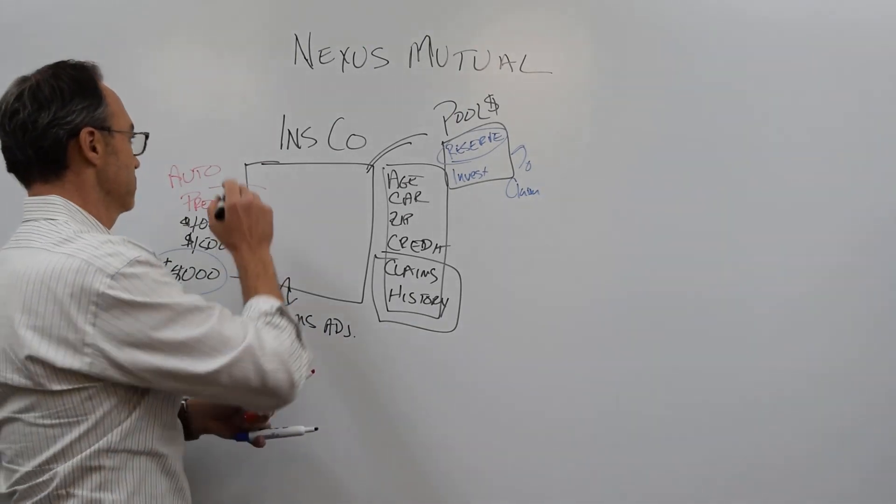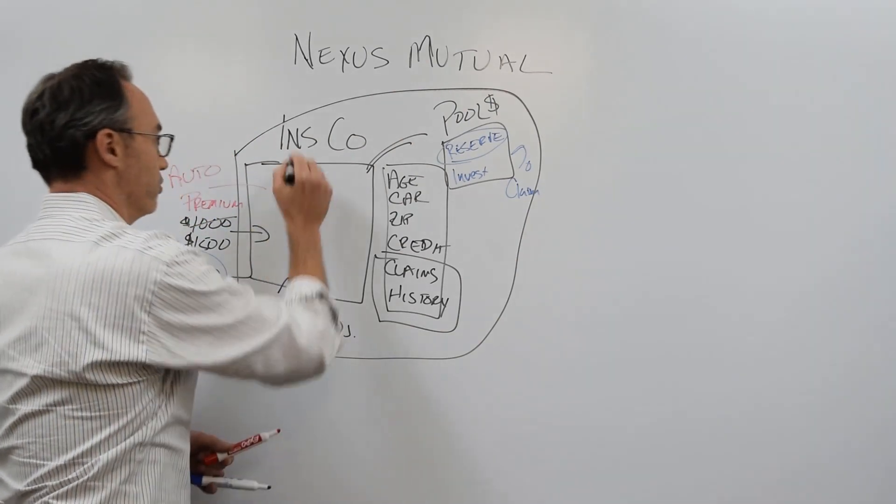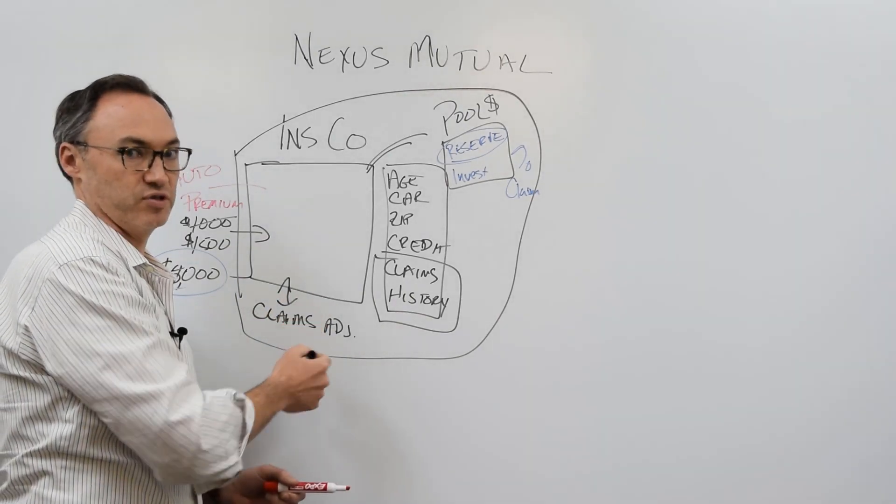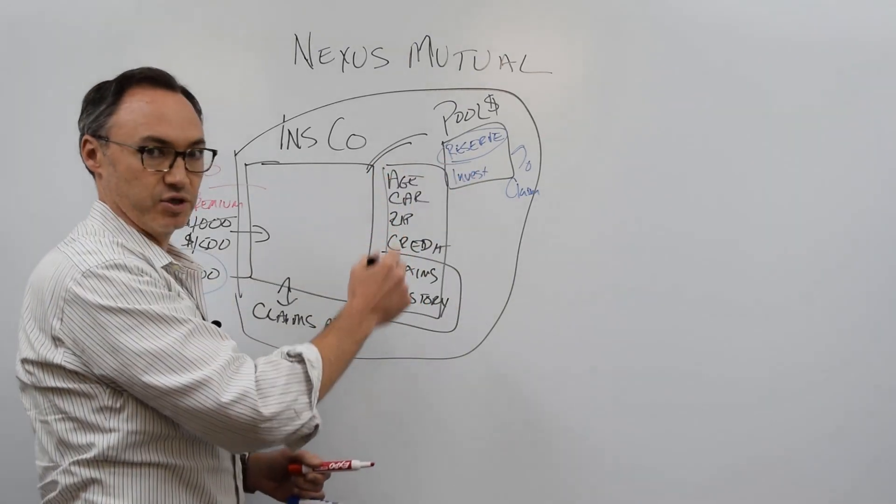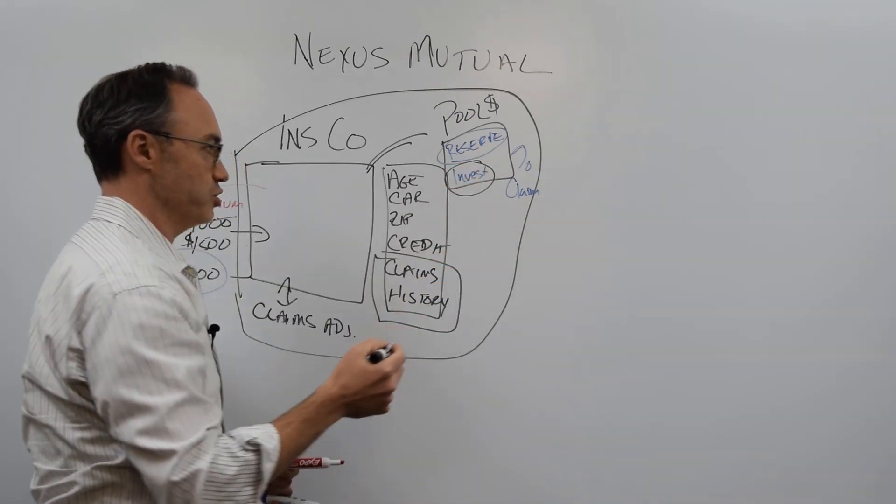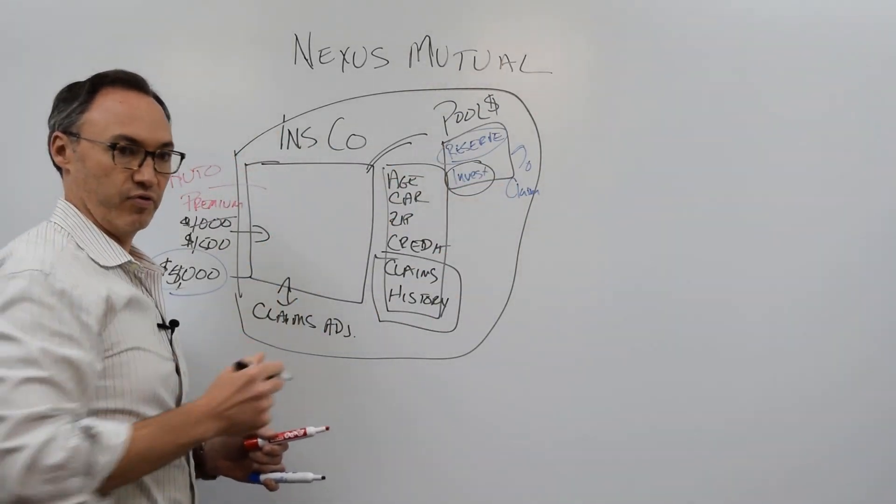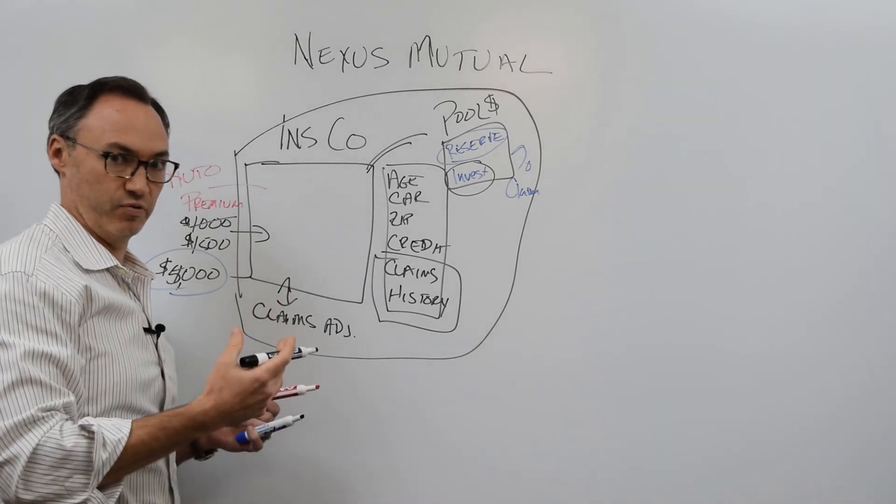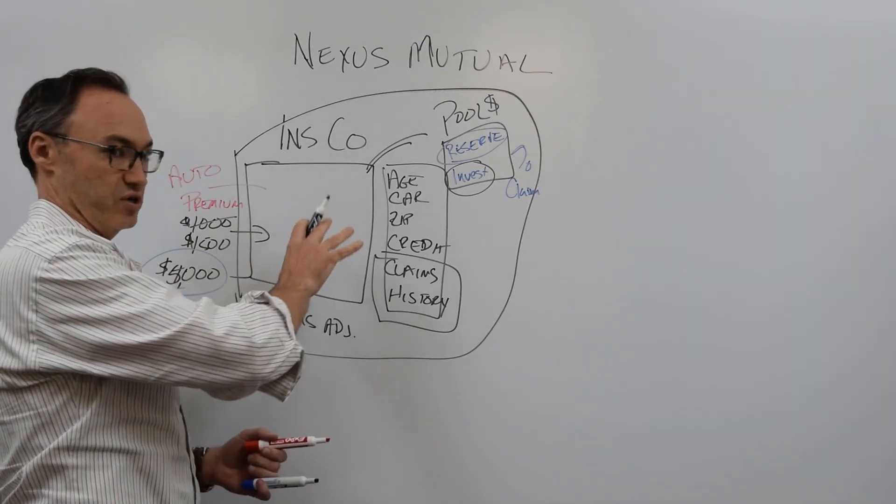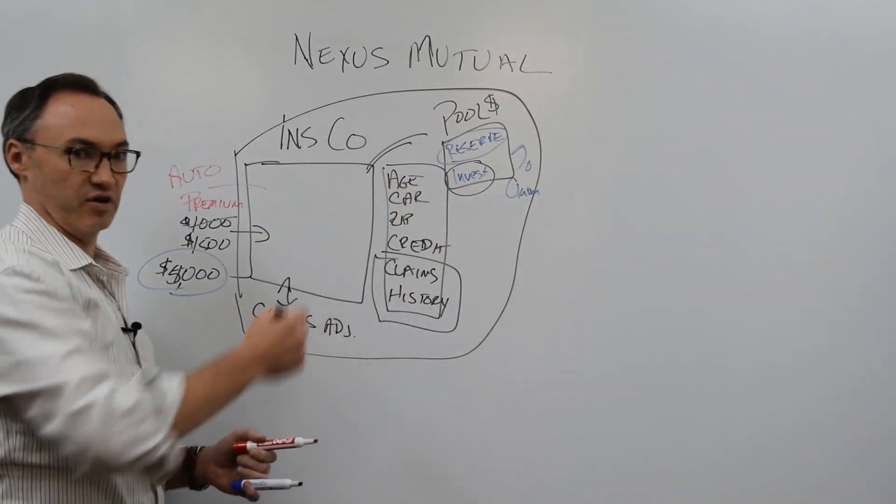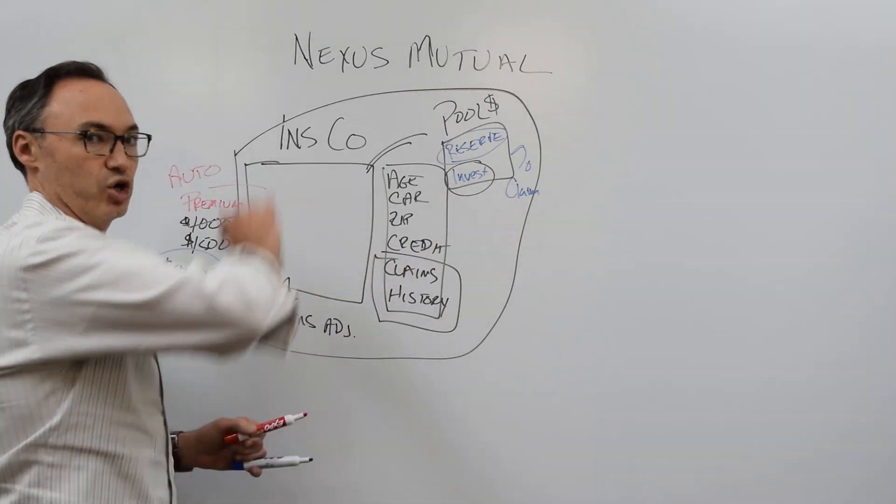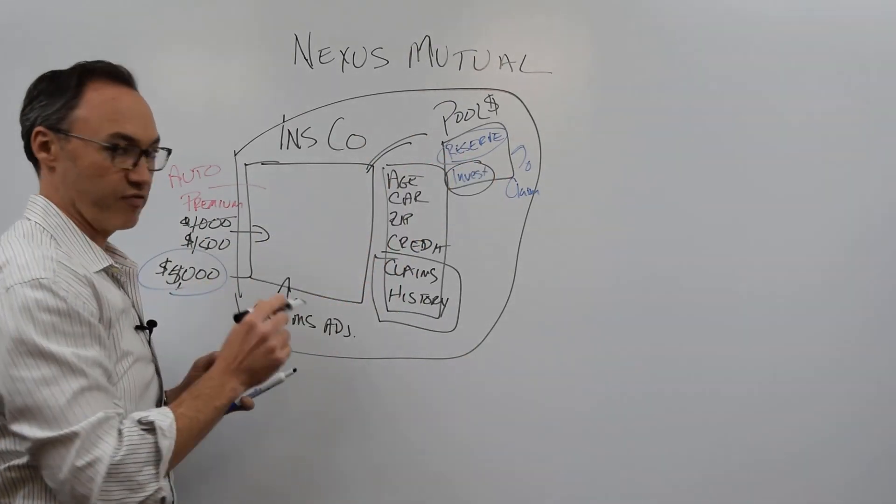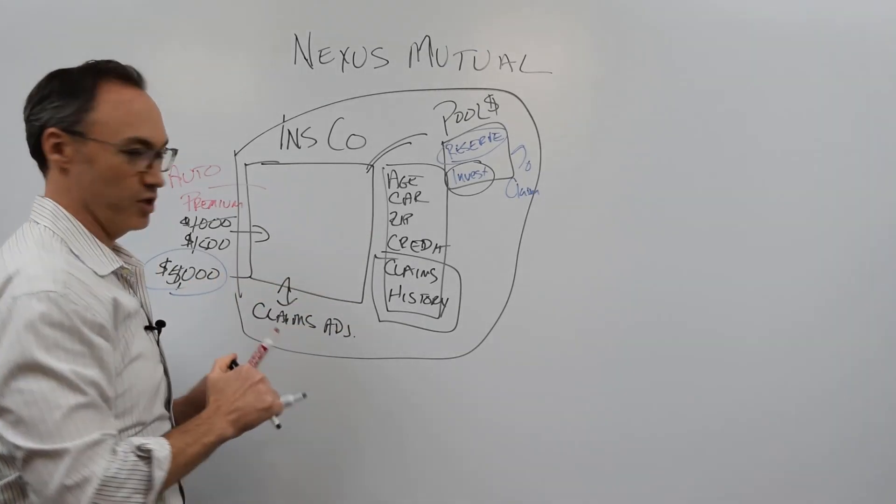Most of this here is all kind of under the purview of the insurance company, whatever company that might be. They might have outsourced claims adjusters. They might have their own claims adjusters. They might outsource some of the data collection, the premium collection, the investment management. But this is all kind of under their purview. They get the database. They get to keep track of everything. This is obviously very centralized, but it's something that we've come to just kind of be okay with because we're outsourcing all that trust and risk and the management of this pool to the insurance company.